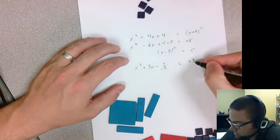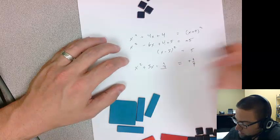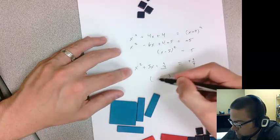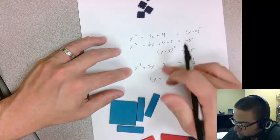So I'm going to add 9 fourths to both sides to keep the equation equal, and then this is equivalent to x plus whatever number, squared.